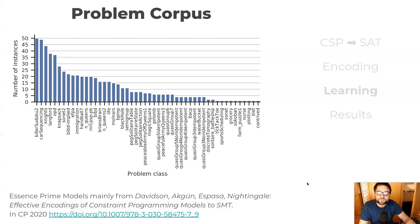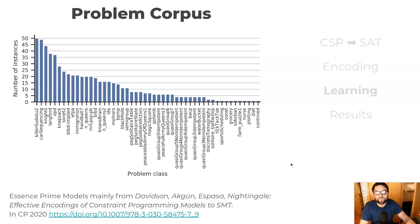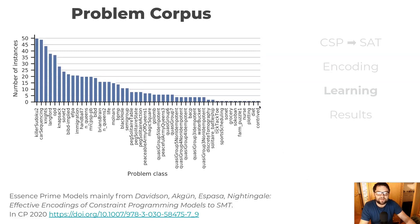In terms of the problems that we used, we used a corpus from a recent Savile Row paper. One advantage was that the models were already written in Essence Prime, and it also had a wide variety of problem classes. Although one issue is that there are many more instances in some problem classes than in others, which might have as few as one.